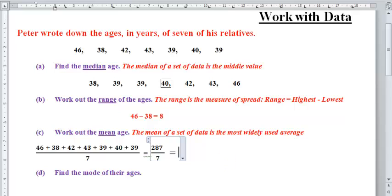You can always use a calculator to verify that. Now let's have a look at the very last question. The very last question says find the mode of their ages. In the case of mode, we're talking of the most often.